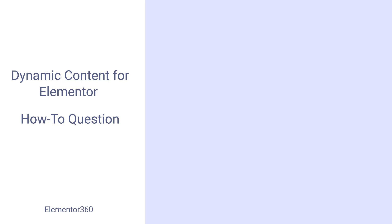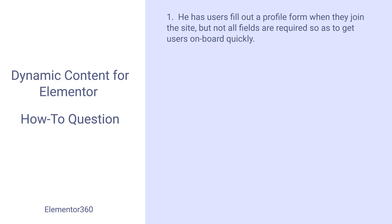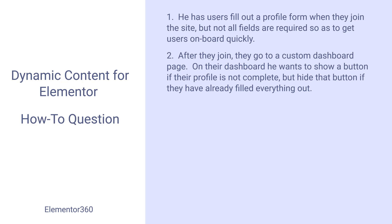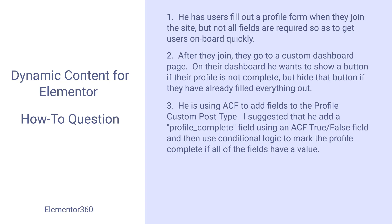A reader recently left a comment on one of my posts with a how-to question. He also found me on Facebook and joined the new Dynamic WordPress group, and I was able to get some details from him on what he was trying to do. He has users fill out a profile form when they join the site, but not all fields are required so as to get users on board quickly. After they join and log in, they go to a custom dashboard page. He's using Fluent Forms for his front-end signup form and Advanced Custom Fields to add extra fields for his profile custom post type.